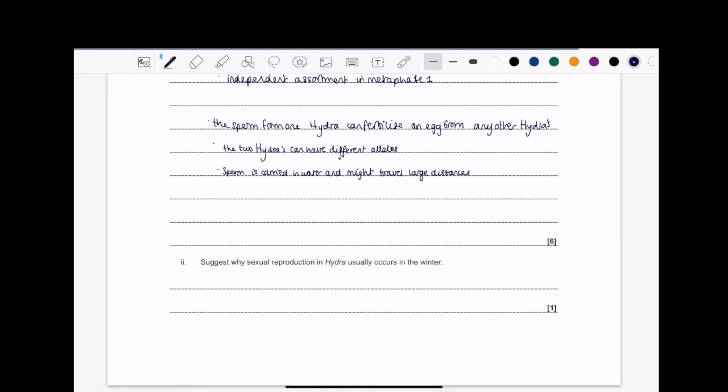Last question says, suggest why sexual reproduction in Hydra usually occurs in the winter. The answer is always going to be the same. So in winter, of course, there's unfavorable conditions. Let's be honest. Hydra doesn't want to be producing offspring in snowy conditions or in really cold conditions because then the offspring aren't going to survive. Some might, but others won't.